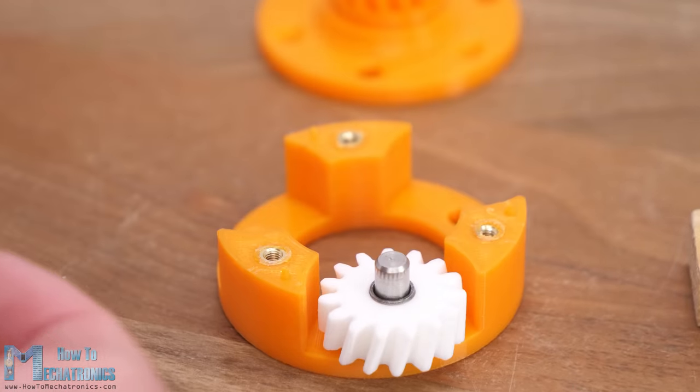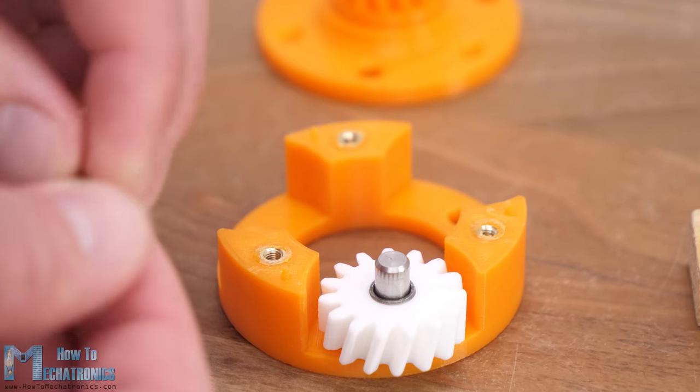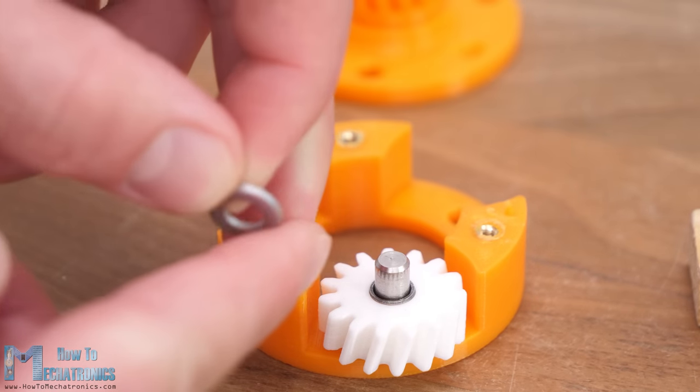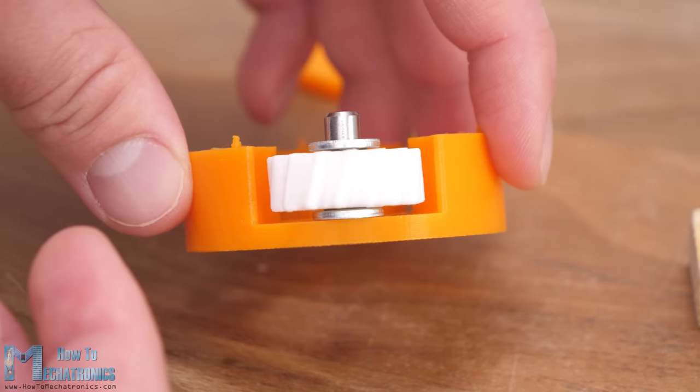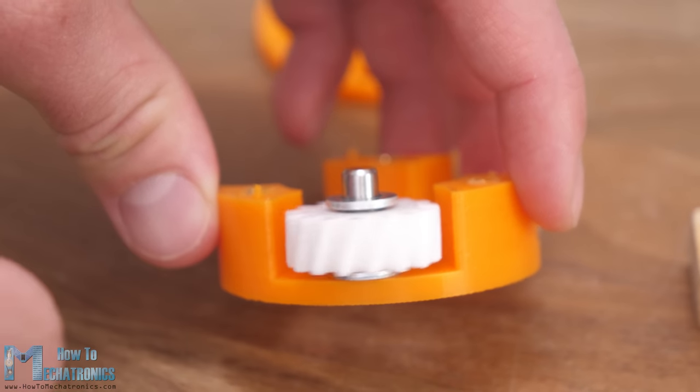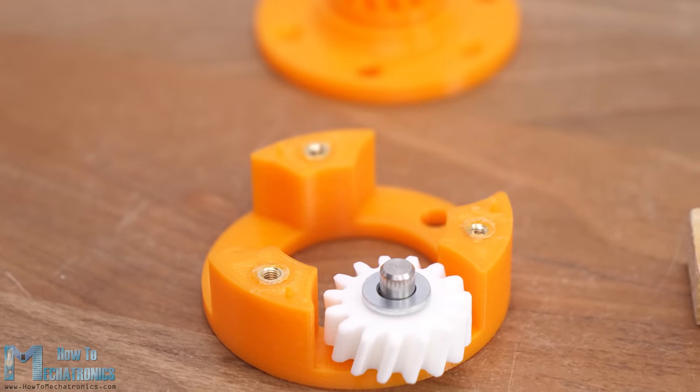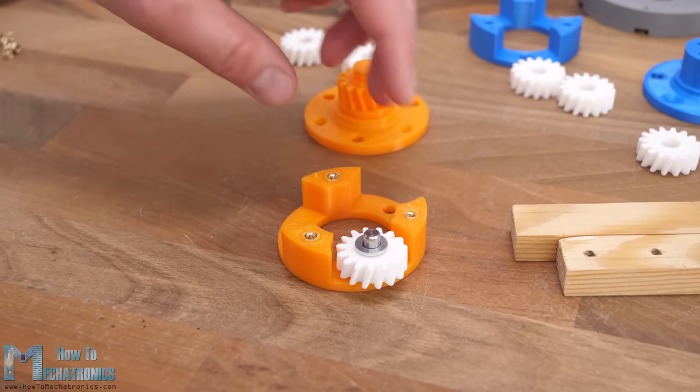Ideally here instead of bushings we should use other types of bearings which can accept axial forces that occur due to the helical tooth profile of the gears. But just like I already mentioned, I designed this gearbox based on the components that I had at home from my previous projects.